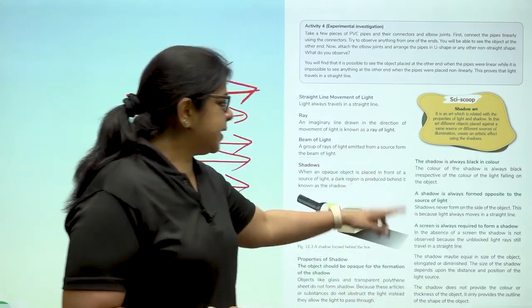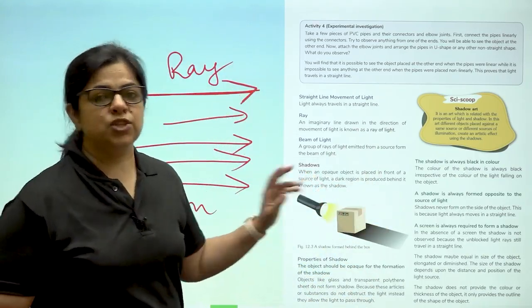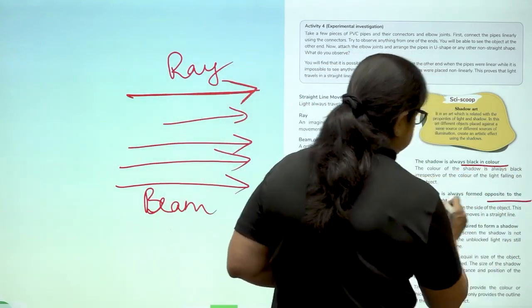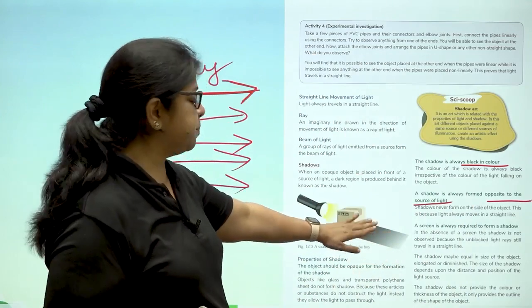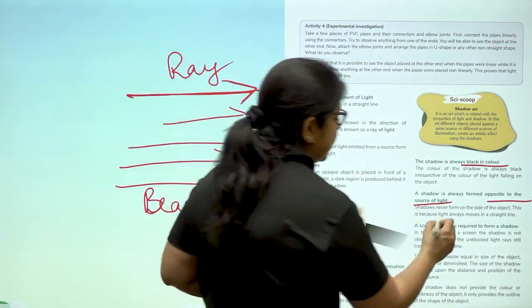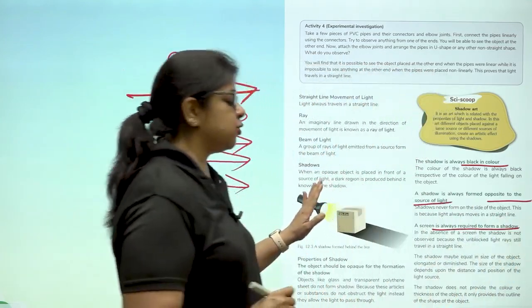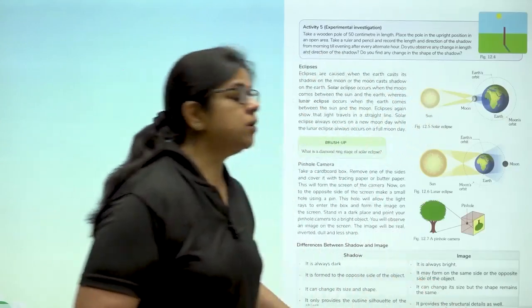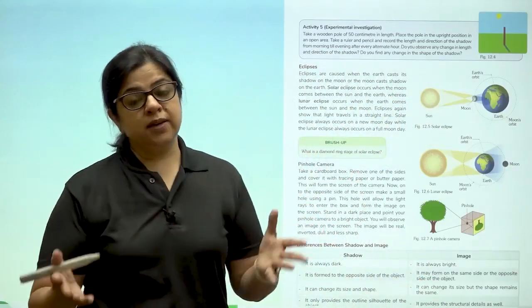So these are the basic characteristics of the shadow: always black in color, formed opposite to the source of light, that means always formed behind the object. A screen is always required to form a shadow. And also the object has to be opaque.